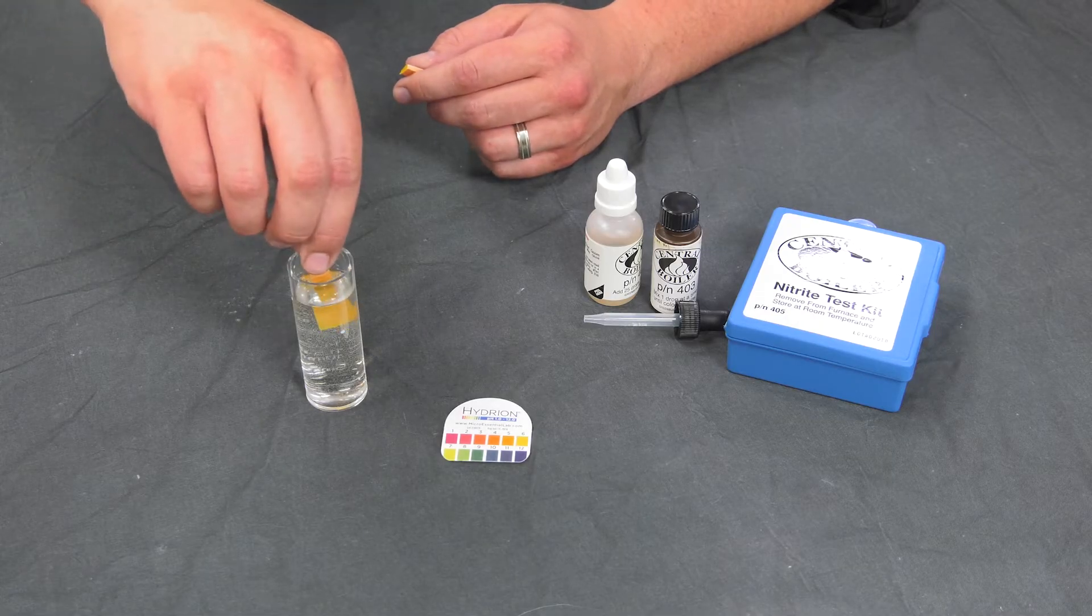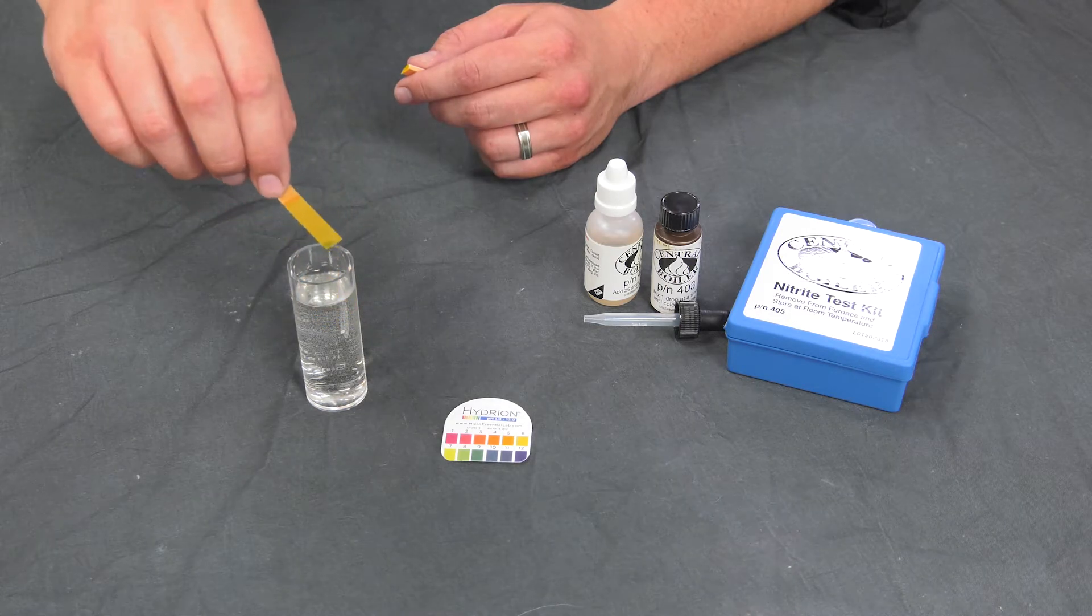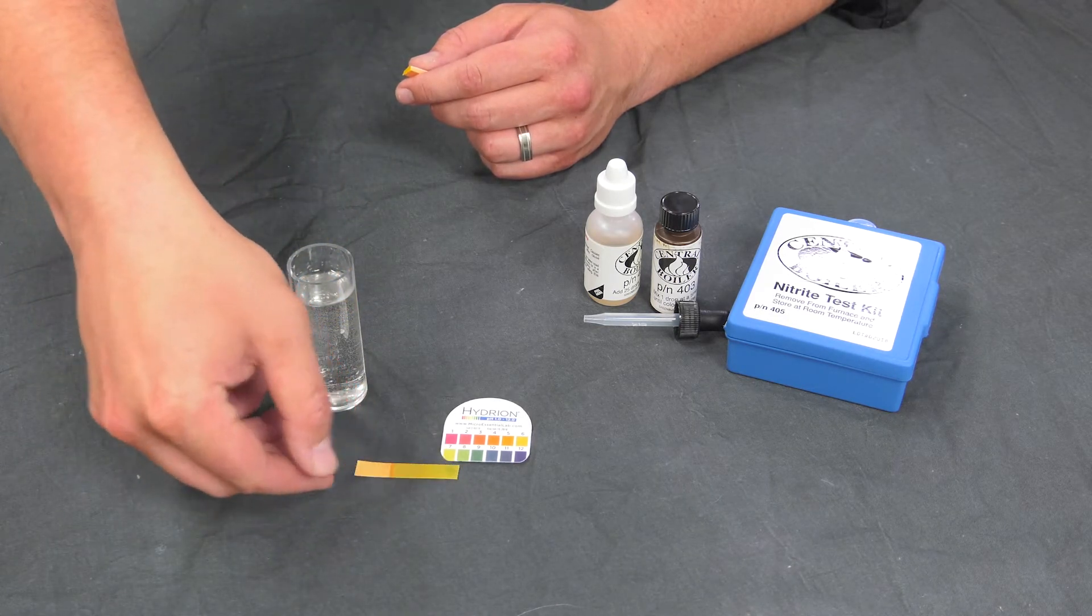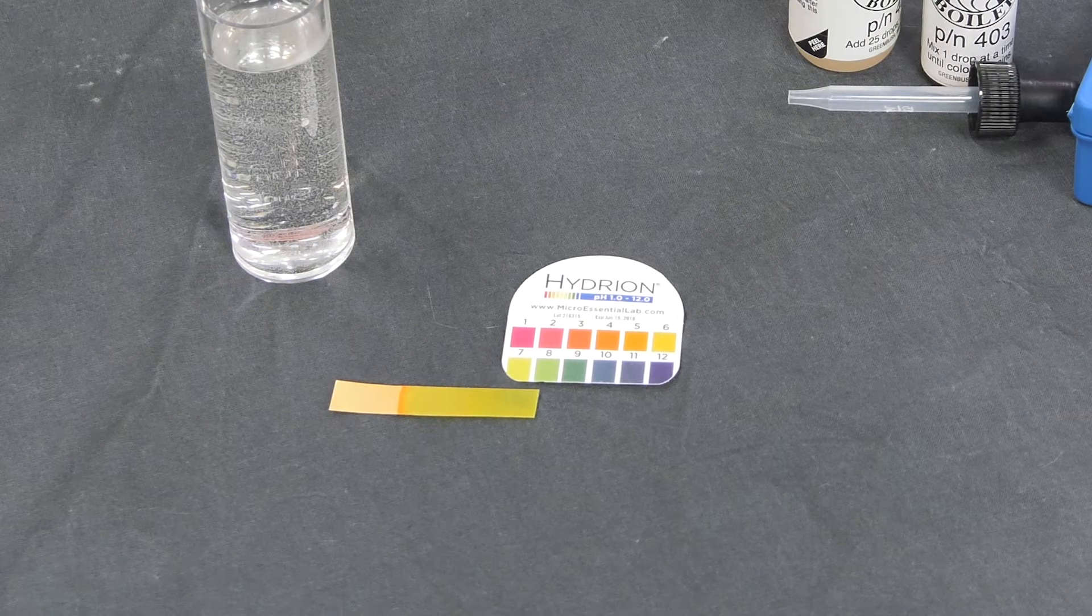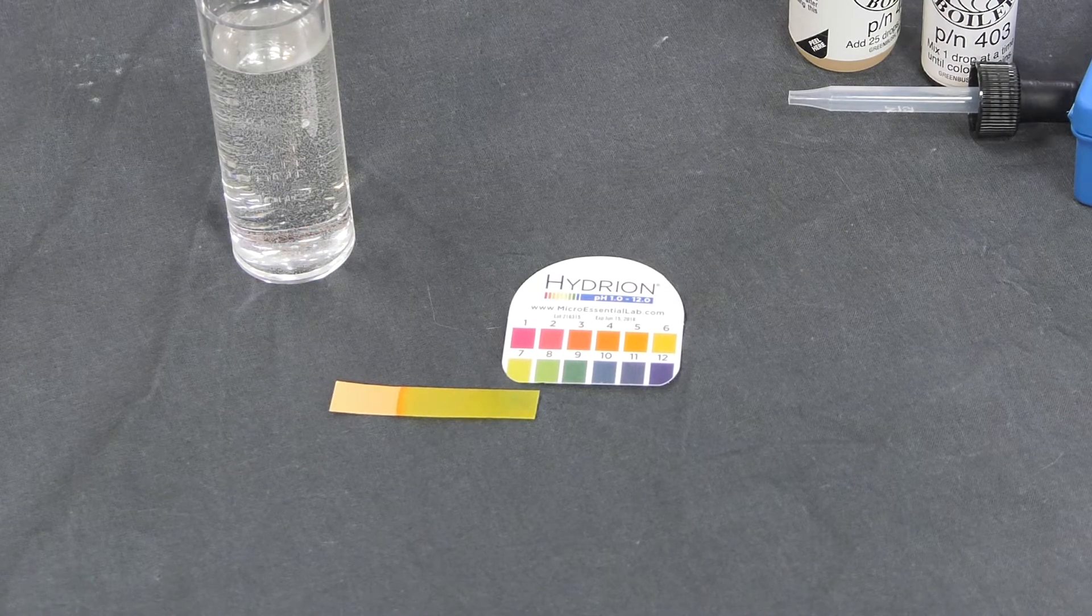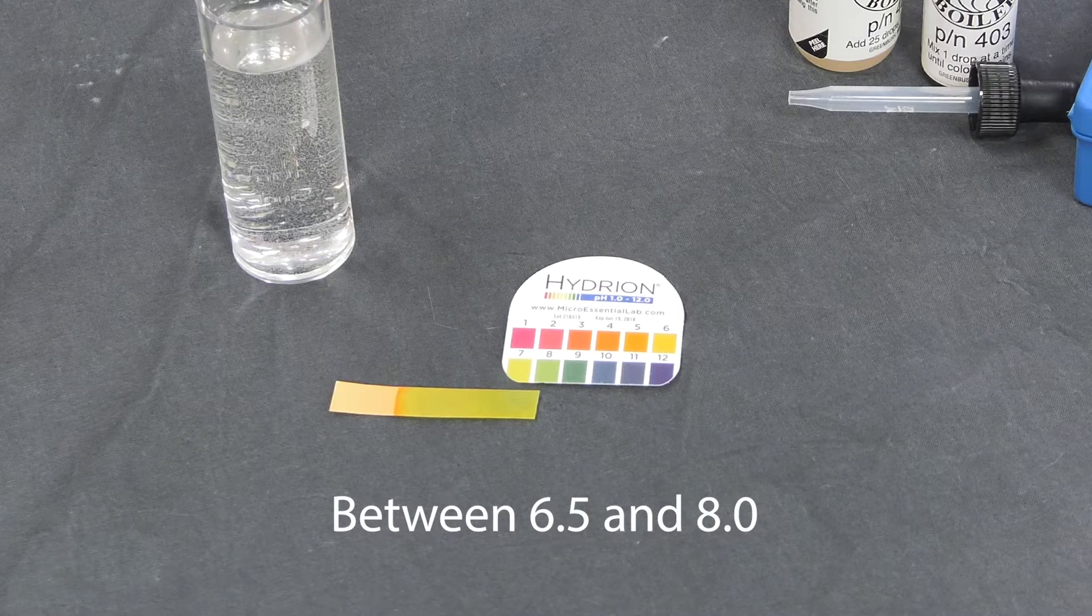Dip the pH test strip from the test kit into the water sample and compare the color of the test strip to the chart provided to determine the pH level. The pH of the water being used to fill the furnace should be between 6.5 and 8.